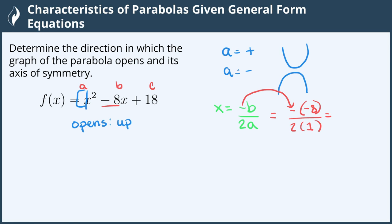Because a negative negative 8 gives us a positive 8. Positive 8 divided by 2 times 1 is 2. 8 divided by 2 is 4.